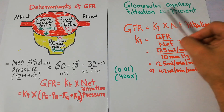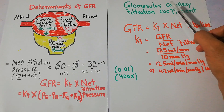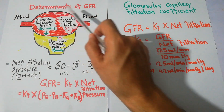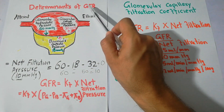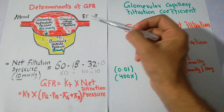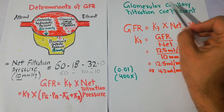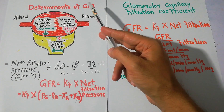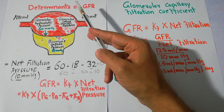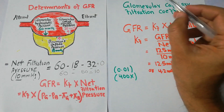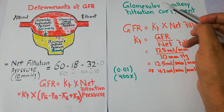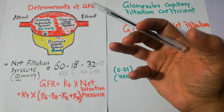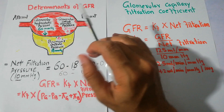Today we are going to talk about the Glomerular Capillary Filtration Coefficient. We will discuss this topic in relation to our previous lecture on the determinants of GFR, or Glomerular Filtration Rate. It is important because it has an effect on GFR and is also a determinant of GFR. We will quickly revise how this topic links with our previous lectures.